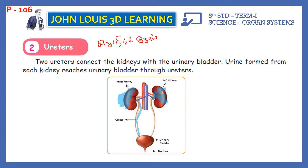Two ureters connect the kidneys with the urinary bladder. Urine formed from each kidney reaches the urinary bladder through the ureters.